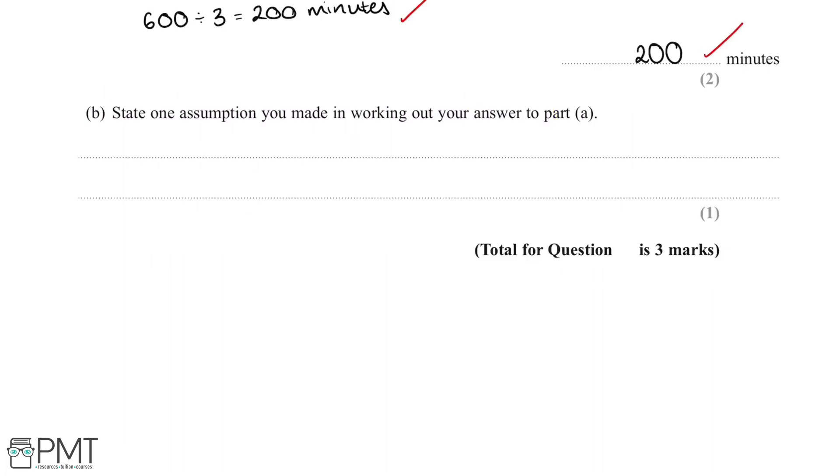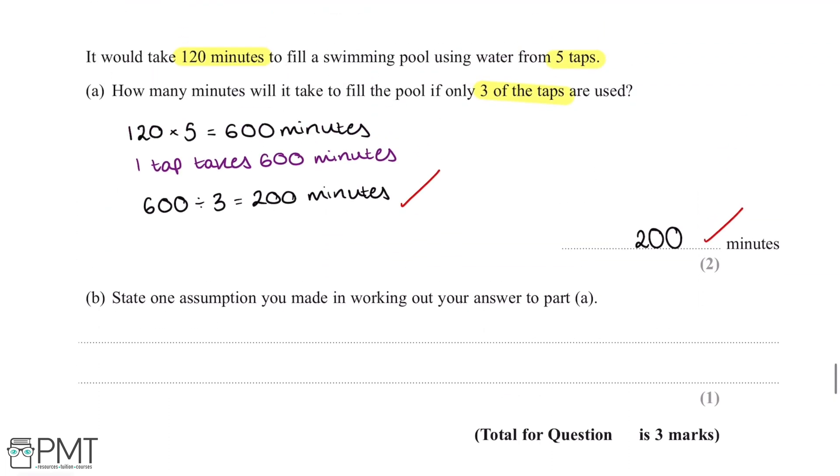Part b: State one assumption you made in working out your answer to part a. So in part a, we worked out that one tap would take 600 minutes to fill up the pool. This is assuming that all of the taps would take 600 minutes.